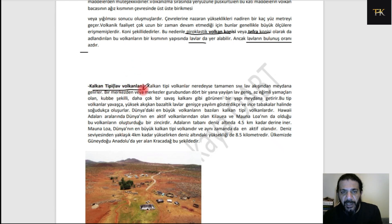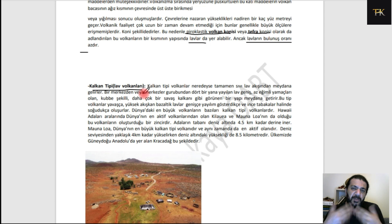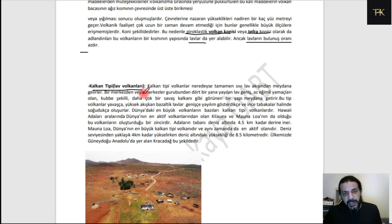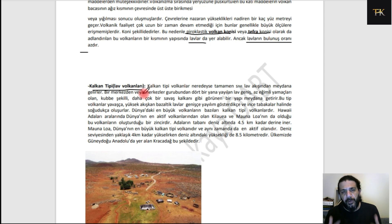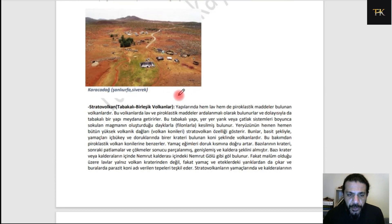Kalkan tipi volkanlar, lav volkanları: eğer bazaltik lavlar çıkışı söz konusuysa ve piroklastik malzeme çok çıkmıyorsa, sadece akışkan lavlar çıkıp etrafa yayılıyor; kalkan şekilli yayvan bir yanardağ oluşuyor. Karacadağ ve Hawaii'deki Mauna Loa, Mauna Kea kalkan şekilli yanardağlardır; lav volkanlarıdır. Piroklastik malzeme çıkışı çok çok azdır; daha çok lavlar çıktığı için bunları kalkan tipi volkanlar olarak nitelendiriyoruz.